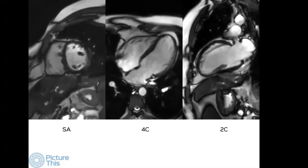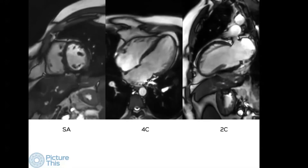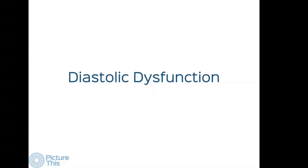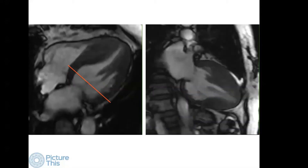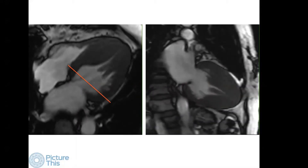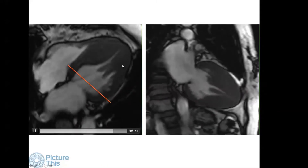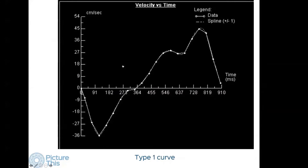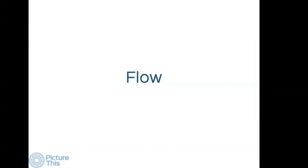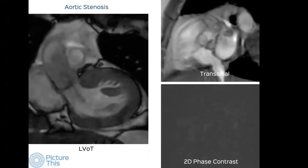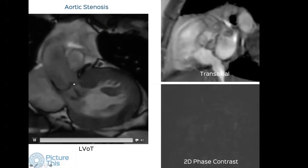We can also look at diastolic dysfunction, though we don't do this on a routine basis. We can look at transmitral flow — this is a patient with hypertrophic cardiomyopathy; we measure the LA volumes and get typical curves. The other functional analysis we can do is flow analysis. Here is a patient in the left ventricular outflow tract (LVOT) view showing both aortic stenosis and regurgitation.